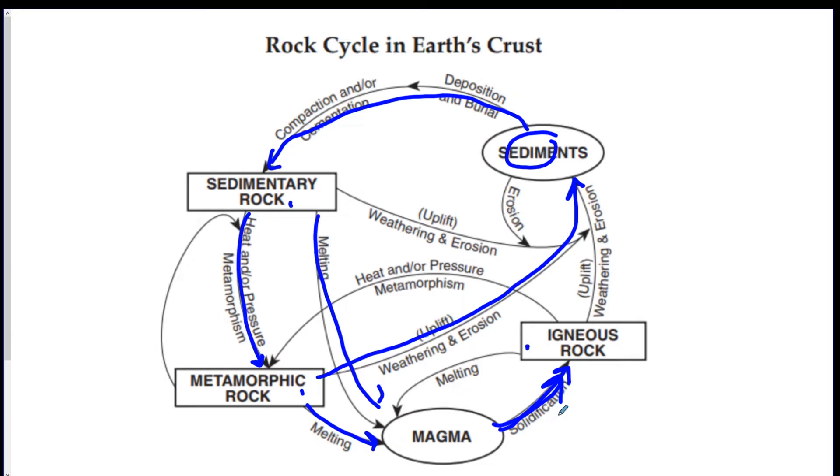So that's why it's called the rock cycle. You can go a bunch of different ways in this. But this will give you a lot of answers to questions. If they ask you how a rock was formed, say metamorphic, you don't have to remember. Just look at what arrows are going into it. Heat and pressure. So metamorphic is made by heat and pressure. Sedimentary up here is made from deposition and burial and compaction and cementation.